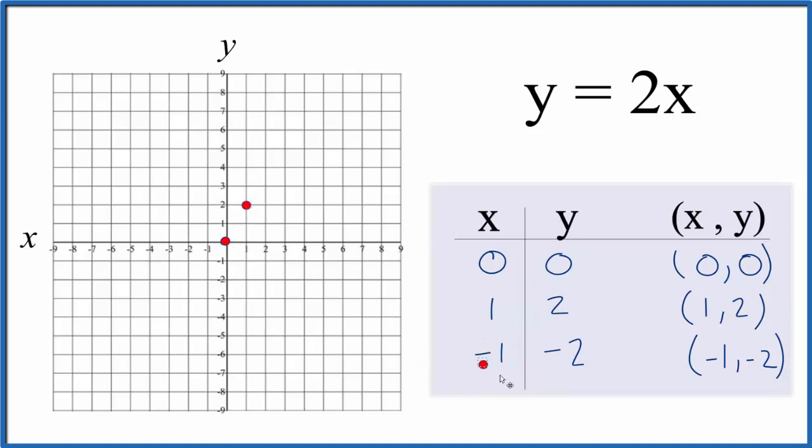And then x is negative 1, and y is negative 2. x is negative 1, go to negative 2 on y, and you can see they're all in a line here, and we could just put a line right through that for our graph.